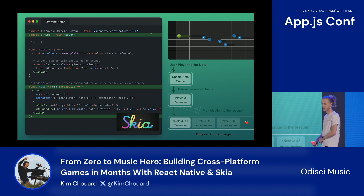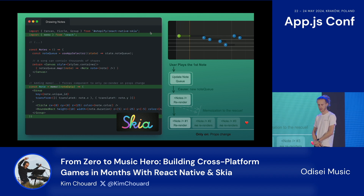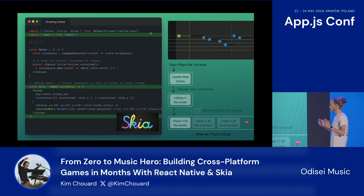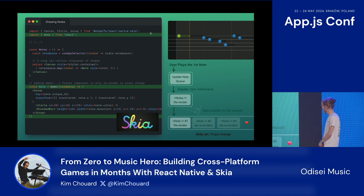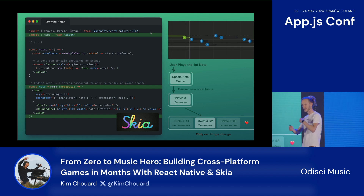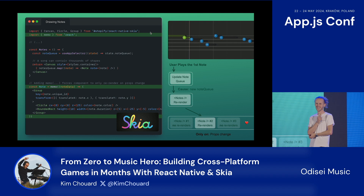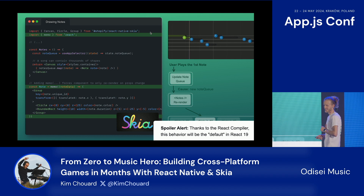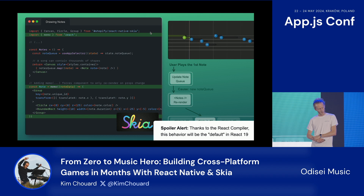Luckily, memoization can come to the rescue. It's just a React concept we can import. We wrap our notes element into a memo function, and what this does is the component only re-renders if its props change, not if a parent re-renders. So when the user plays the second note, only one note updates. I kind of wish this was done by default, but as you might have heard, thanks to the React compiler, hopefully with React 18 things will get more in order. Until then, just be careful of re-renders.